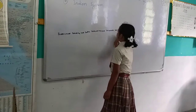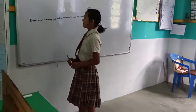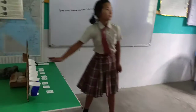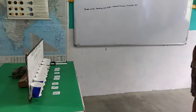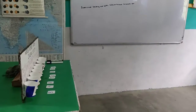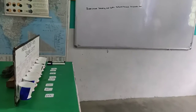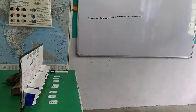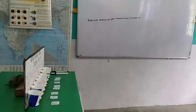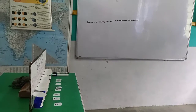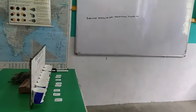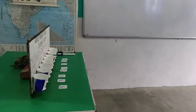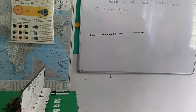Is it correct? Is it correct? This is correct. Yes, sir. So this is 3,79,31,214 in the Indian system.